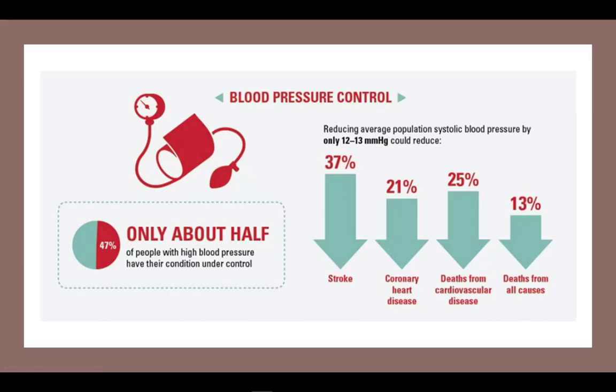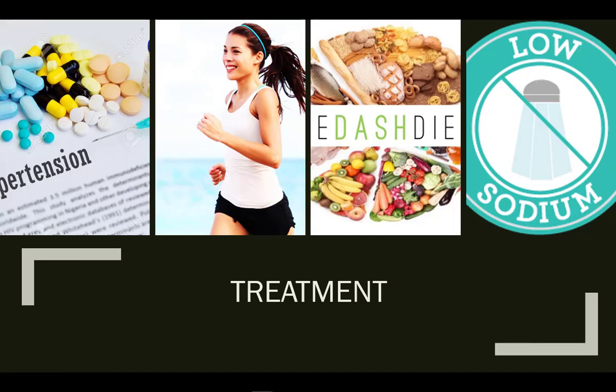Lowering blood pressure can have significant effects on decreasing complications, but only about half of those with hypertension actually have their blood pressure under control. Hypertension can be treated by eliminating certain lifestyle risk factors such as smoking, losing weight, increasing exercise, and changing one's diet. In some people, those changes may be enough to bring blood pressure down to normal levels.